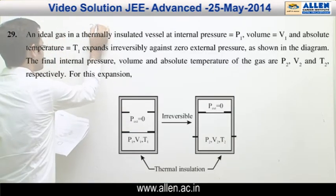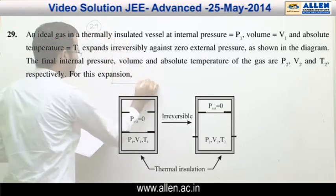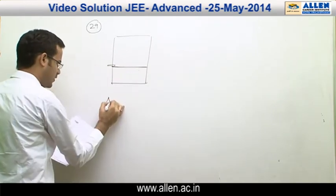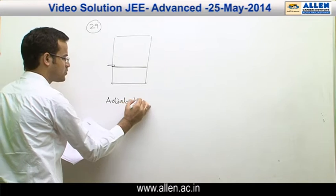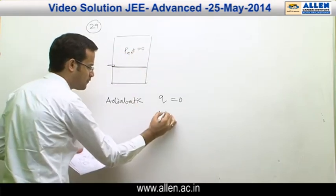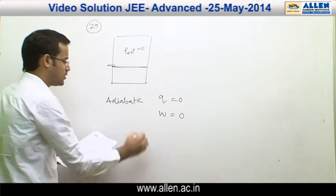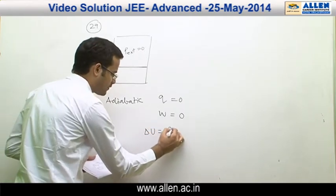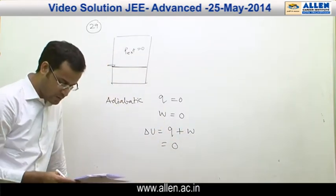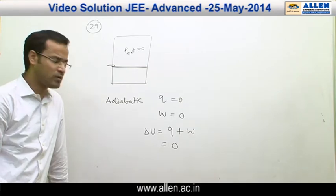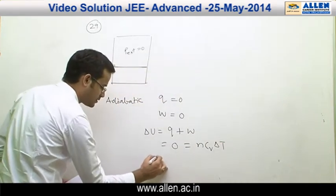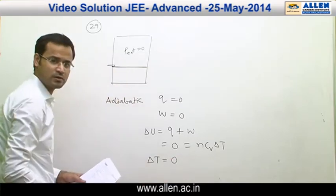Question number 29: Since the container is insulated, therefore the process must be adiabatic. For adiabatic process, Q equals to zero. Since it is free expansion, in case of free expansion work done also equals to zero. Using first law of thermodynamics, which is delta U equals to Q plus W, delta U also equals to zero. For an ideal gas, internal energy depends only on temperature and equals NCV delta T. So we can say delta T equals to zero, means temperature remains constant.